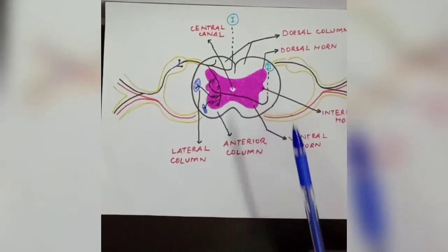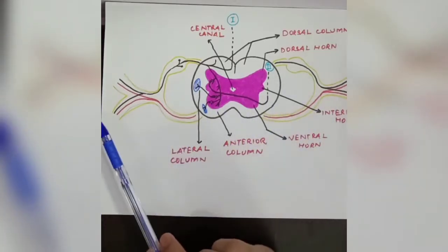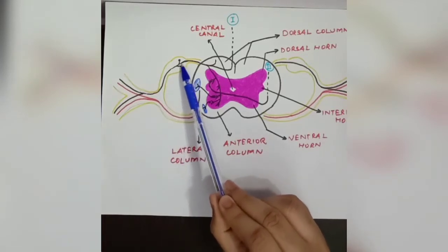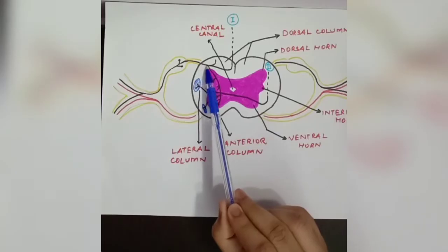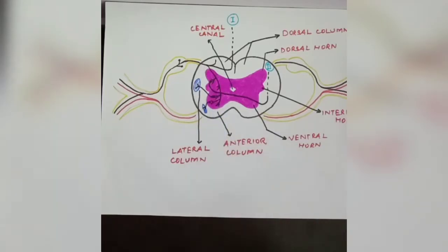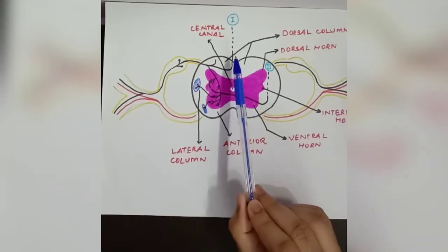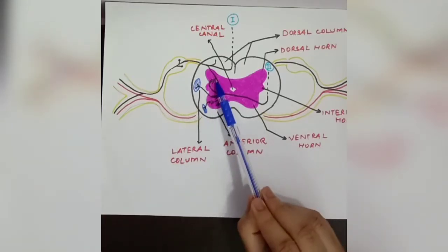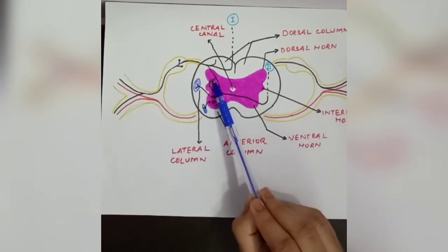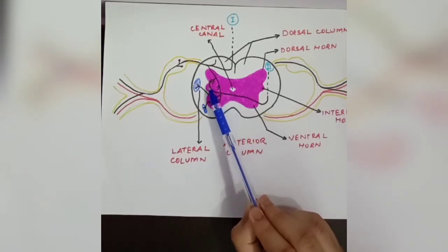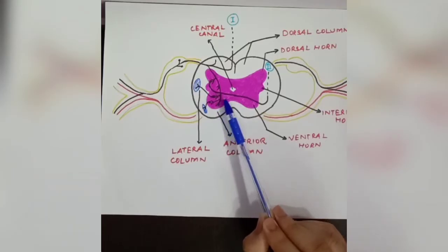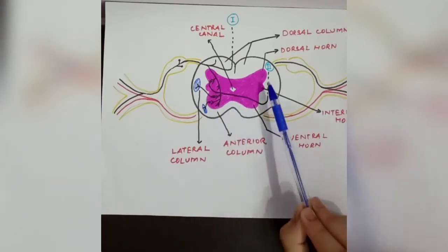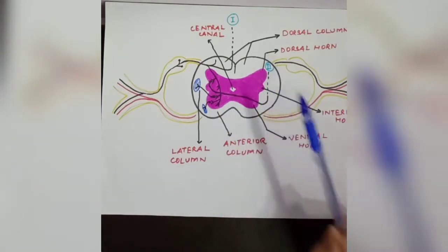We have learned about the transverse section of the spinal cord. The spinal nerve enters via the dorsal root ganglia and at the dorsal root it divides into two parts: the medial branch and the lateral branch. The medial branch continues into the dorsal column medial lemniscus pathway, and the lateral branch terminates in the dorsal horn of the gray matter, where the second order neuron begins. This second order neuron decussates — that is, crosses contralaterally — through the gray matter and continues as the anterolateral spinothalamic pathway.